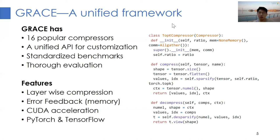Here on the right side, we show you a code snippet of the TopK compressor in PyTorch. To create a TopK instance, you need to specify the compression ratio, the memory function, and the communication primitive, such as all-gather. The compress and decompress functions will then handle the work before and after the communication in the background.